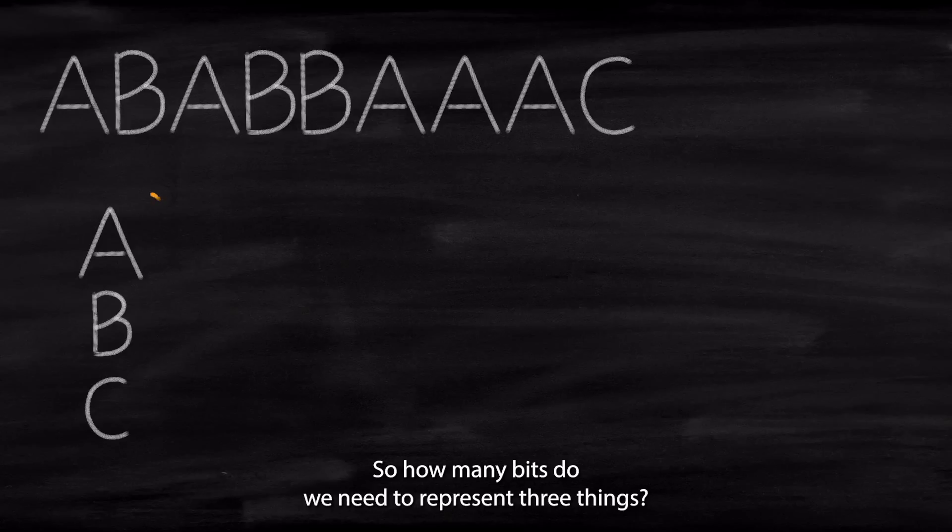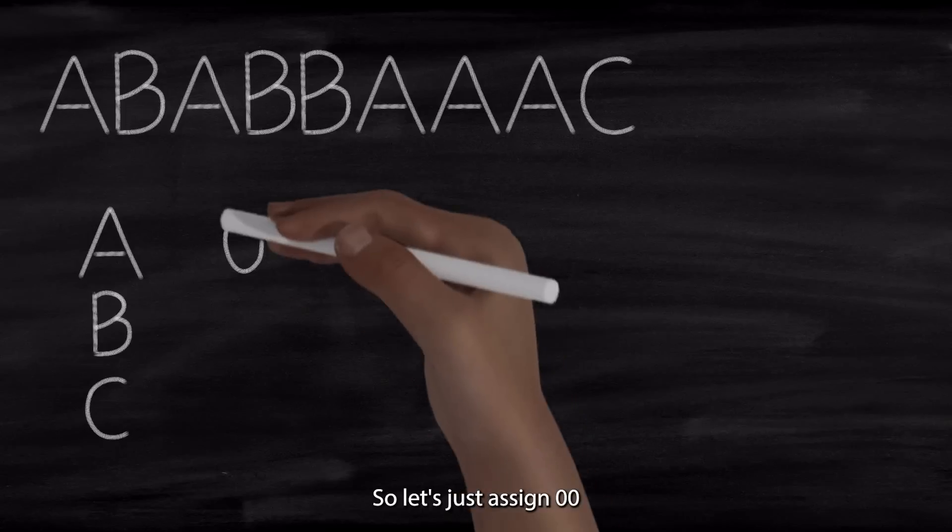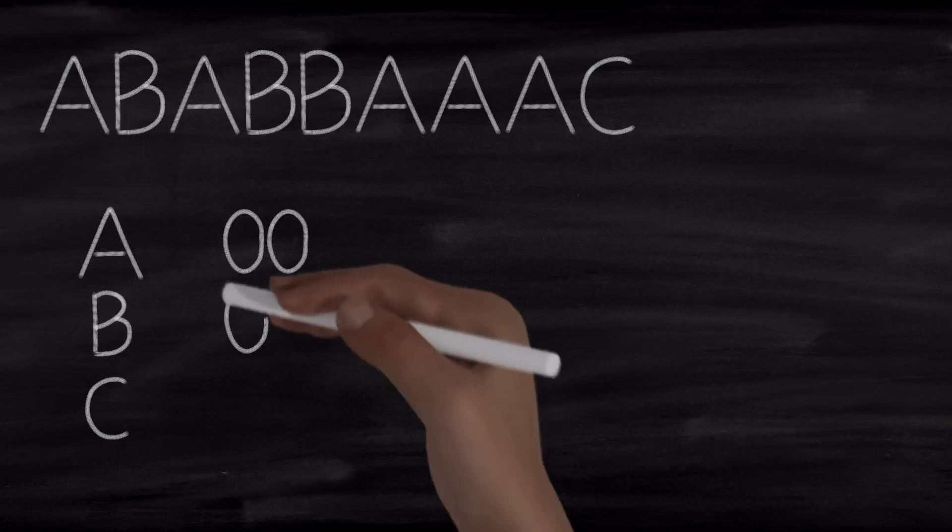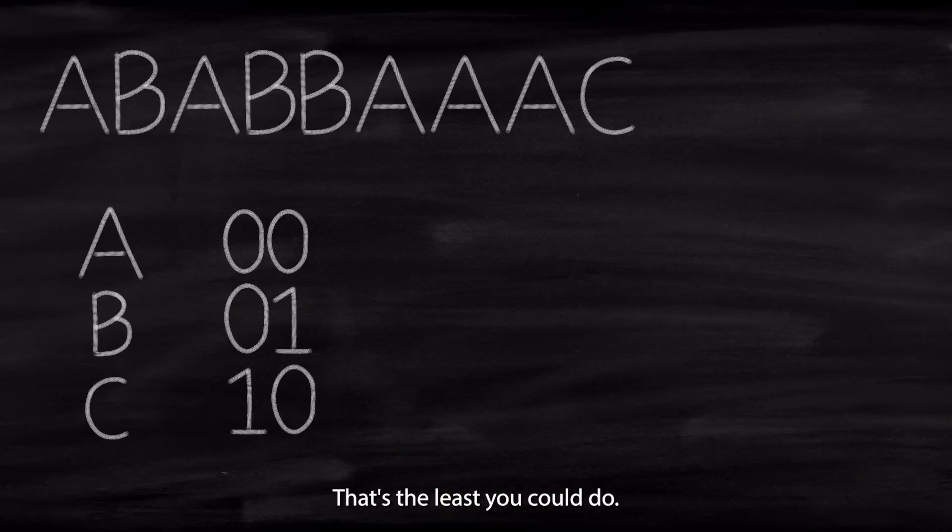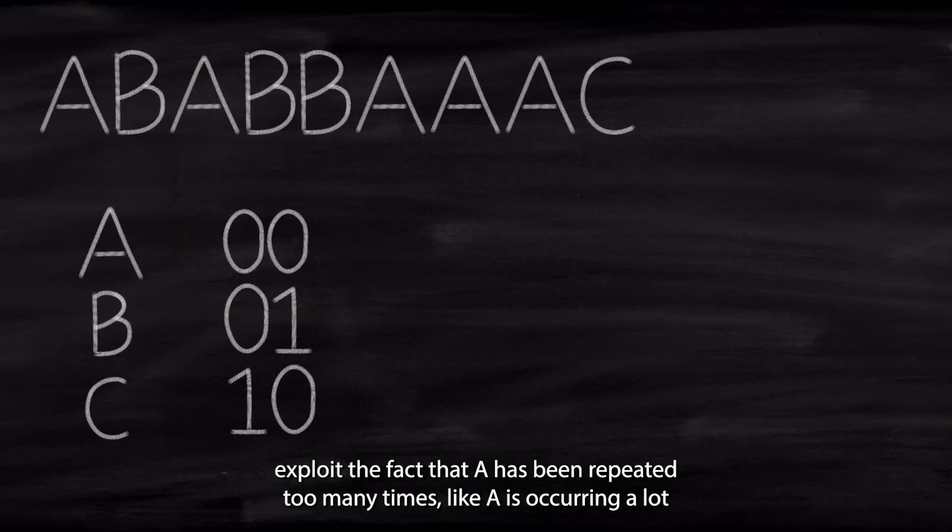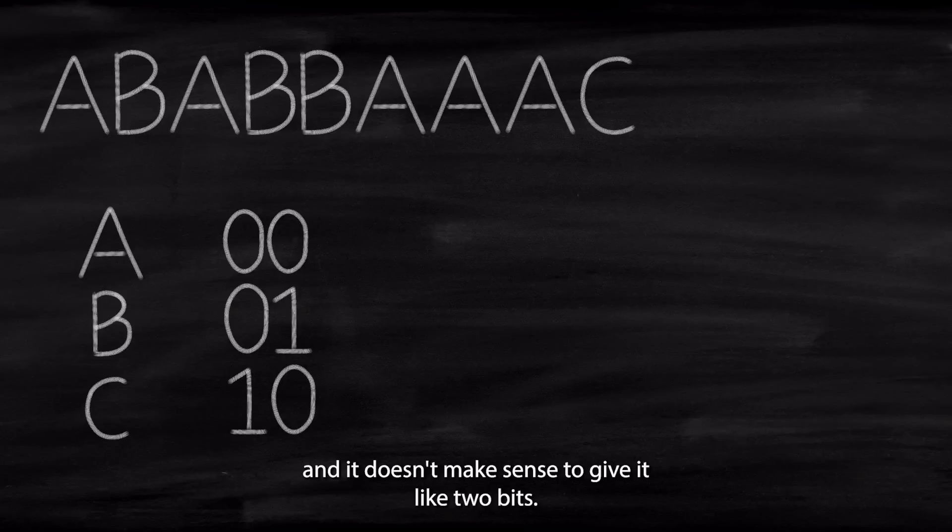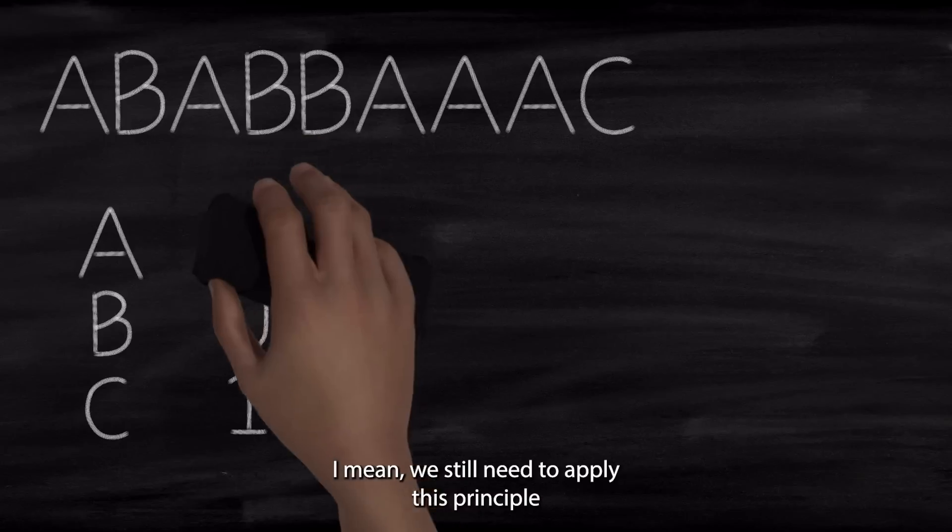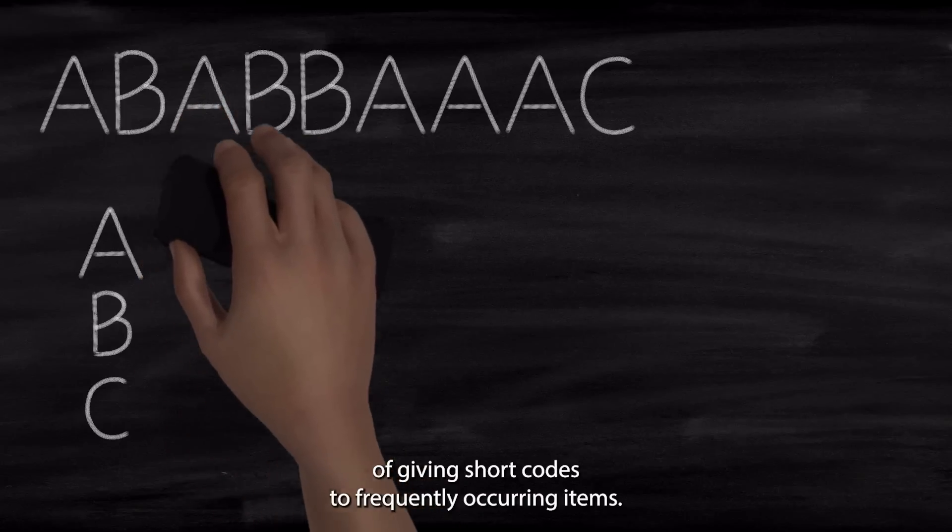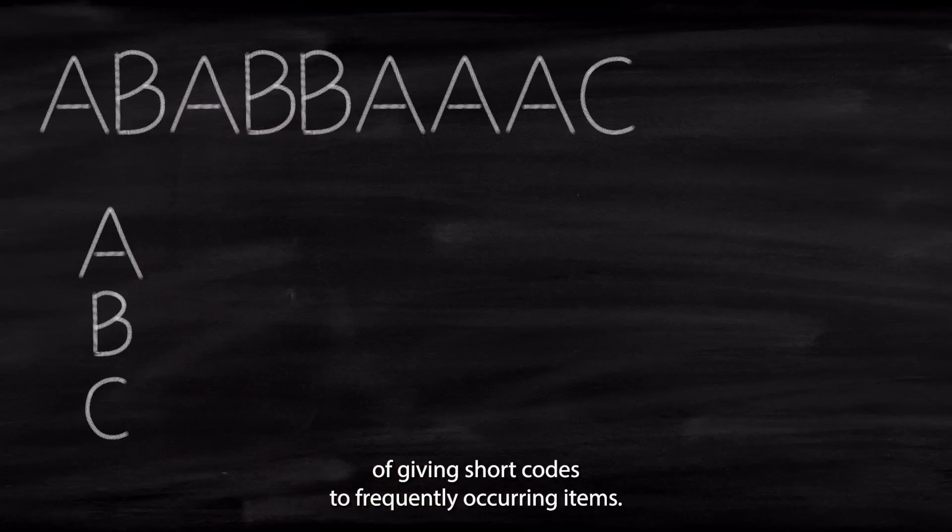So how many bits do we need to represent three things? We need two bits. So let's just assign 00 to A, 01 to B, and 10 to C. That's the least we could do. That's not even the compression we are going through now. That's just something obvious we should have done in the beginning. Now let's exploit the fact that A has been repeated too many times.